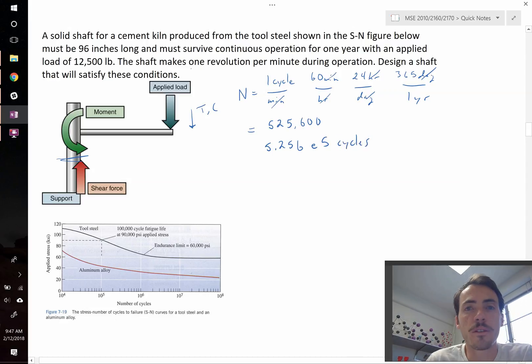So now that we have the number of cycles, we can go ahead and use our S-N figure to figure out what the stress should correspond to to meet this number of cycles for tool steel. Pay attention on this figure down here. You've got both an aluminum alloy line and a tool steel line. We're going to use the tool steel line.